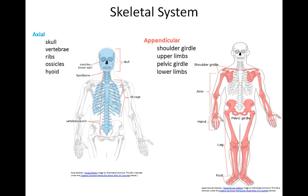Bones highlighted in pink are classified as appendicular skeletal bones, comprising the shoulder girdle or pectoral girdle, upper limbs, the pelvic girdle, and the lower limbs. The next slides will more specifically identify these bones.